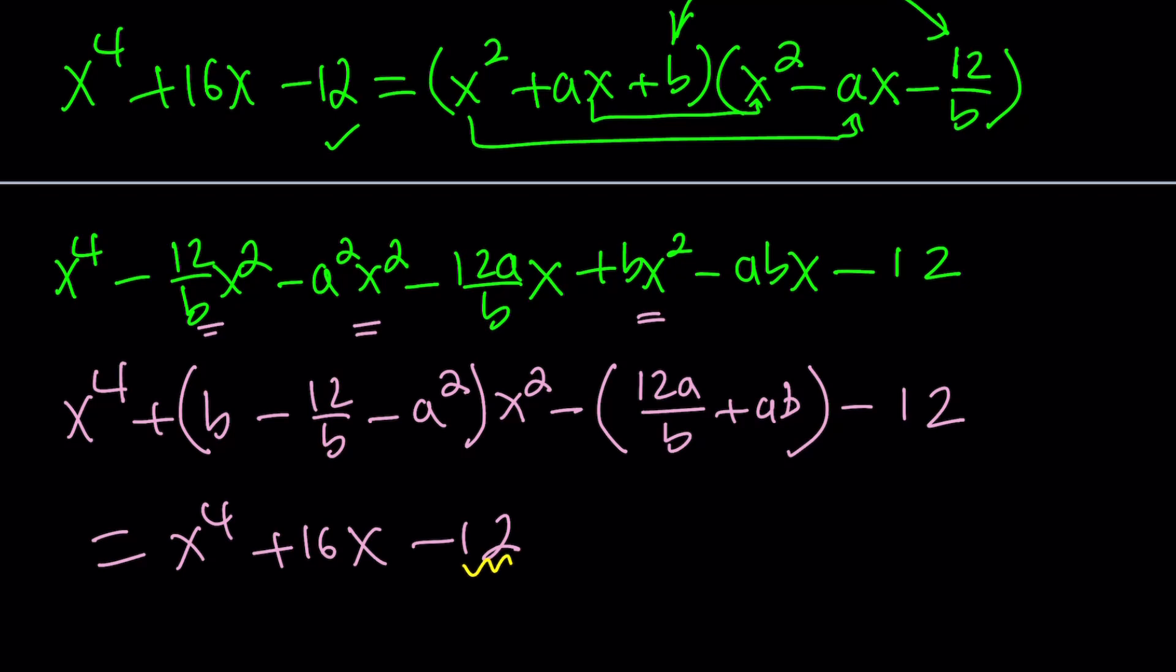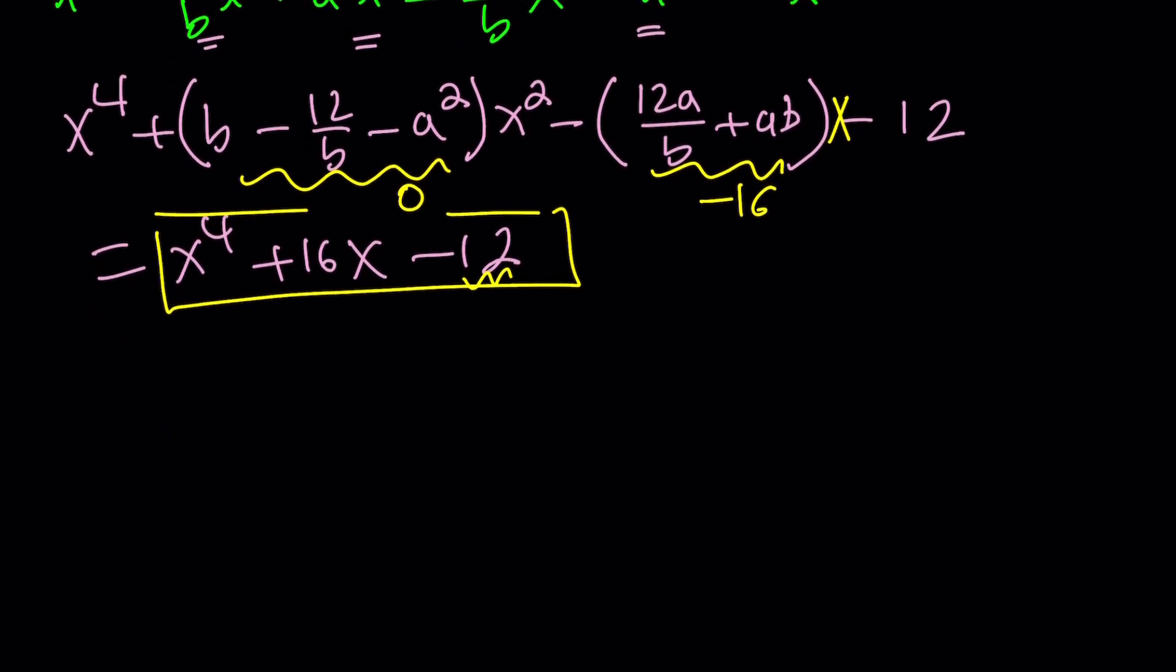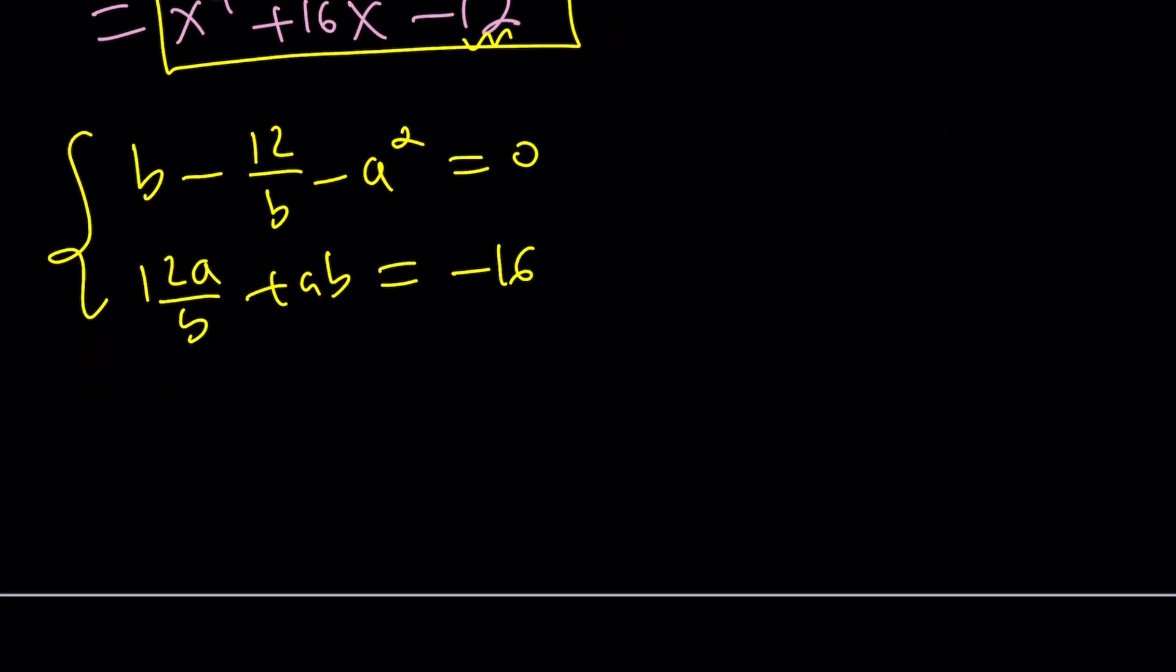And this is equal to x to the fourth plus 16x minus 12. So this means we have the constant term equal to the constant term, so on and so forth. This is not going to really help us. But let's go ahead and focus on the other terms, such as the coefficient of x squared is supposed to be 0, because there is no x squared here, right? And the coefficient of x, I forgot to put the x here, is going to be this one with a negative sign in front of it. But I have a 16, so this should be negative 16. So we get a system of equations.